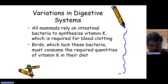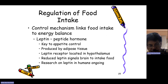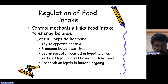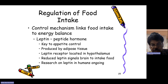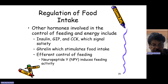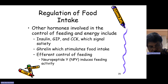Food intake is linked to energy balance through regulation by the peptide hormone leptin, which is produced by adipose tissues. Leptin receptors in the hypothalamus reduce appetite by signaling the brain to reduce food intake. Other hormones involved in control of feeding and energy include insulin, GIP, and CCK, which signal satiety, whereas ghrelin stimulates food intake. Neuropeptides also induce feeding activity.